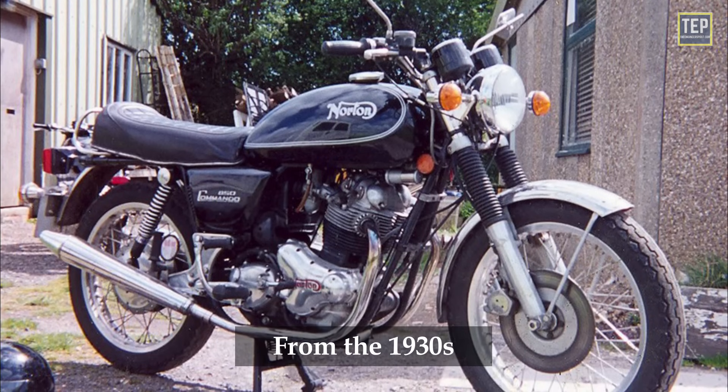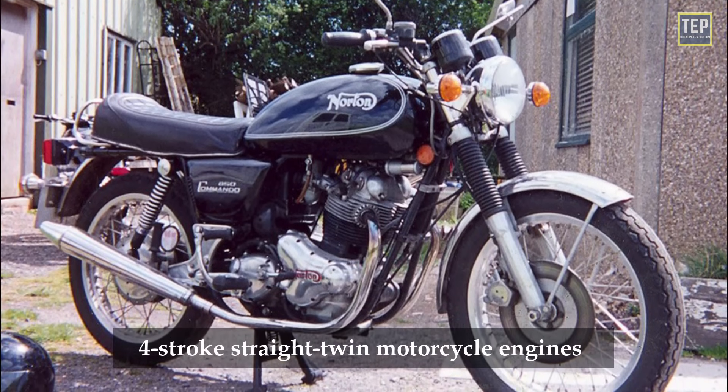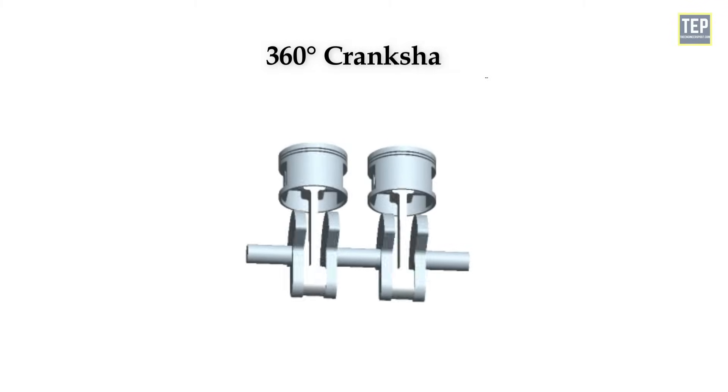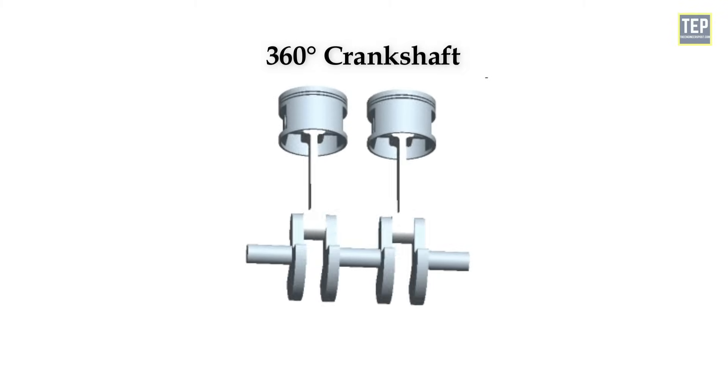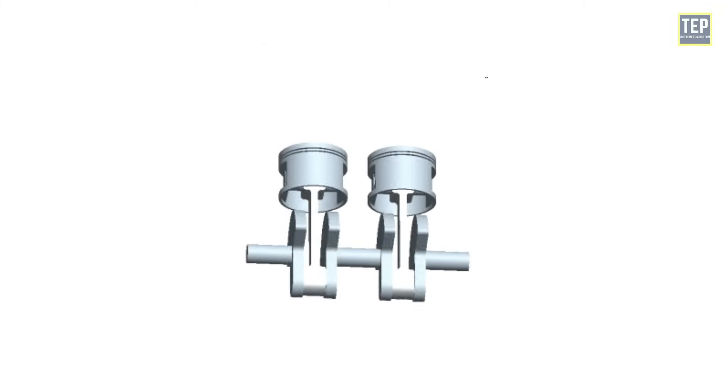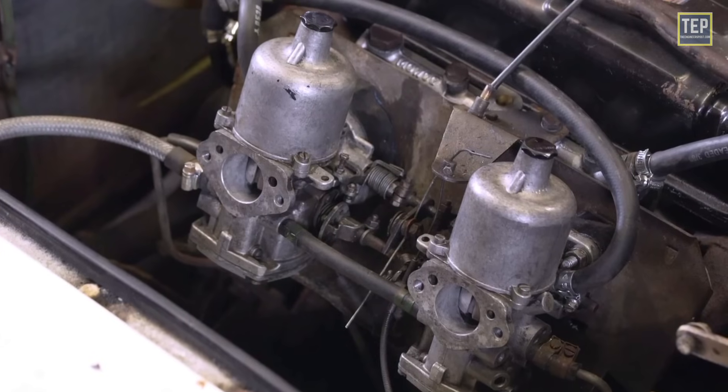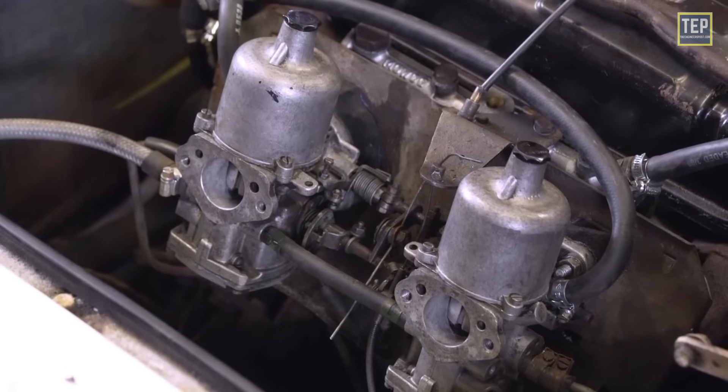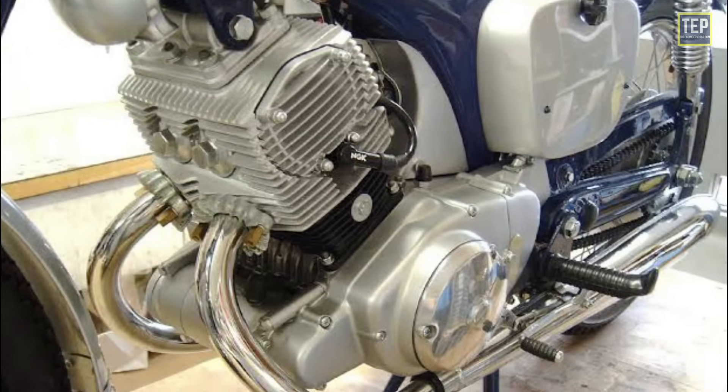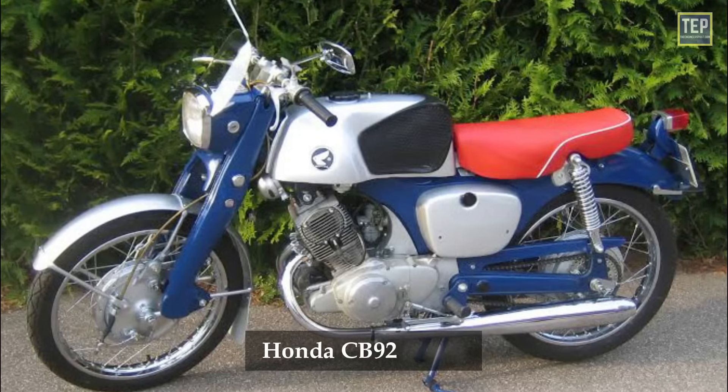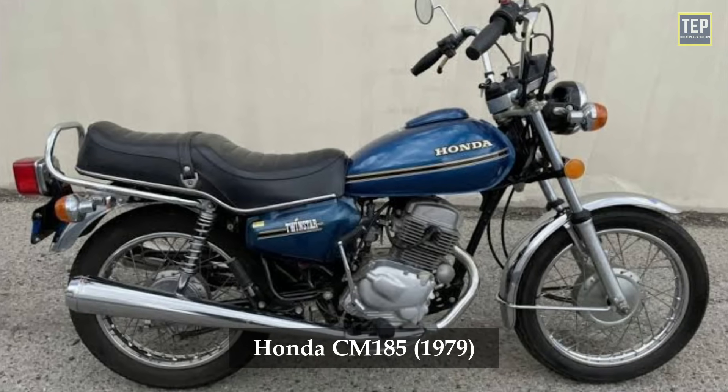From the 1930s, most British four-stroke straight twin motorcycle engines used a 360-degree crankshaft, since this avoided the uneven intake pulsing of other configurations, thus preventing the need for twin carburetors. The vibration was less of an issue for smaller engines, such as the Honda CB92 and Honda CM185.